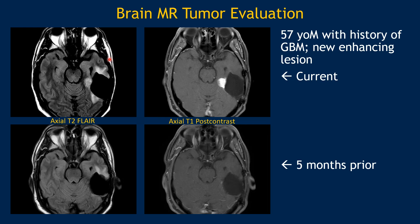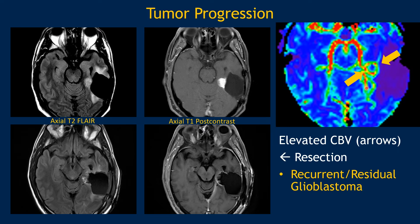In brain tumor imaging, conventional imaging may only show a nodule in the left temporal lobe five months after mass resection. This nodular enhancement was not there before, and in conventional imaging it may be very difficult to tell whether this truly is a recurrent or residual lesion versus treatment or radiation effect. However, DSC perfusion imaging shows that same enhancing nodular lesion has elevated blood volume, shown here in red. This was surgically removed and pathology confirmed recurrent or residual glioblastoma — the perfusion was very helpful in assisting diagnosis before surgery.